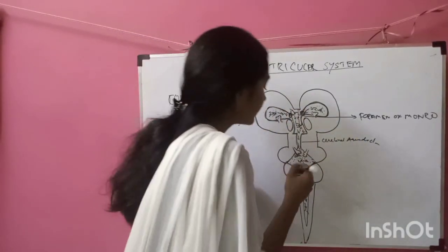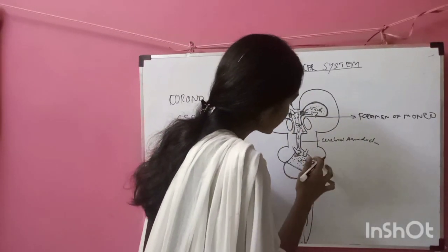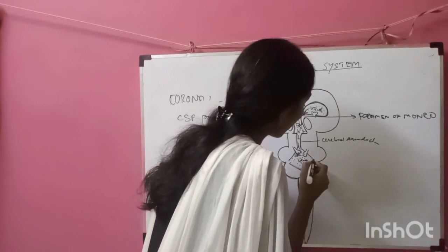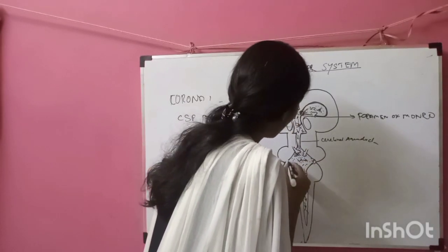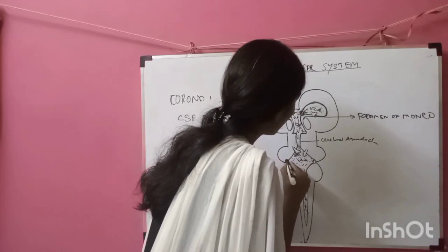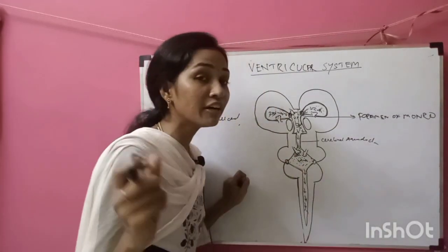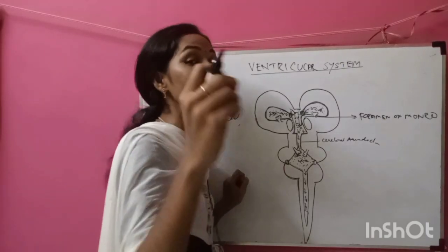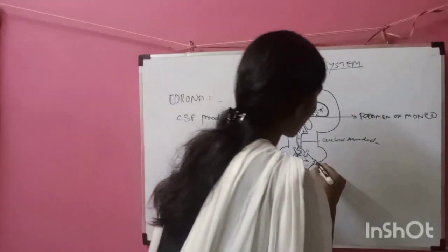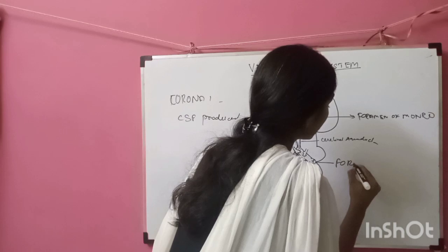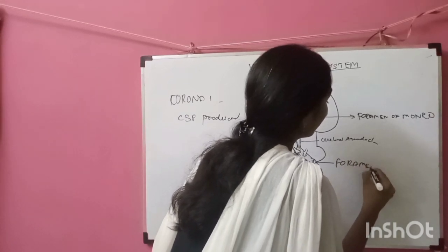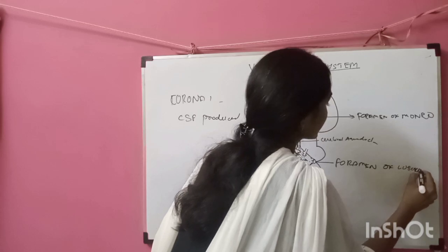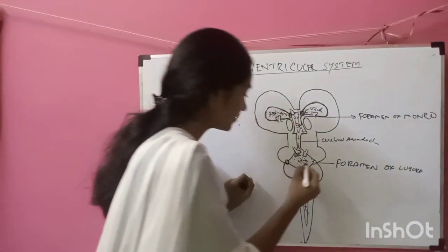There is also an opening present at the lateral sides of the fourth ventricle. These two lateral foramina of the fourth ventricle are called the Foramen of Luschka.